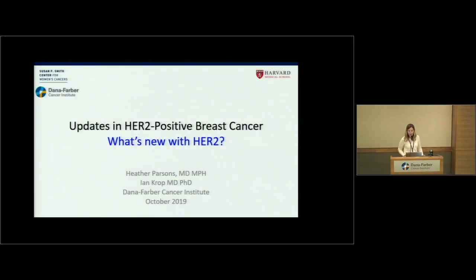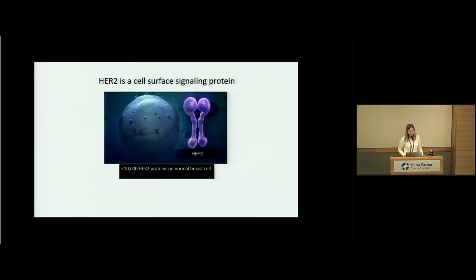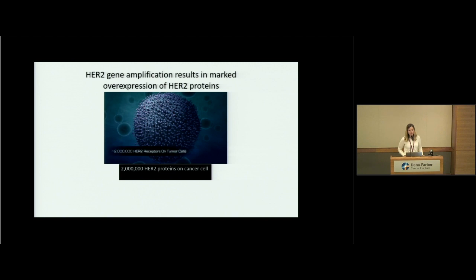This is the session on HER2-positive breast cancer. As background, HER2 is a cell surface signaling protein — this is an artist's rendition of a cell on the left and the HER2 protein on the right. A normal cell has fewer than 10,000 copies, but a HER2-positive breast cancer cell might have two million copies, and the cell is really addicted to that HER2 protein to grow and grow.